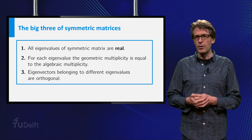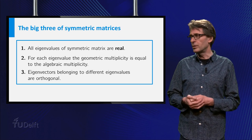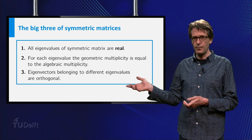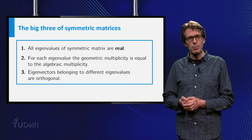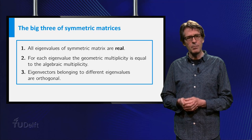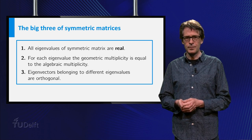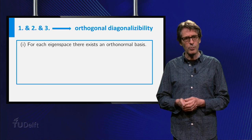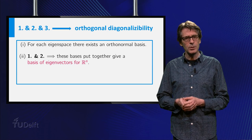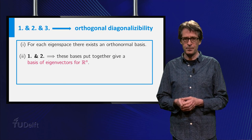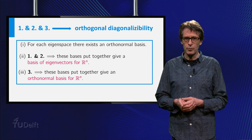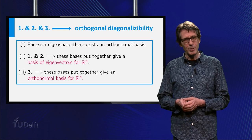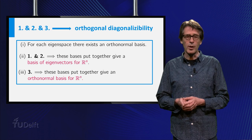Here you see the three important properties of symmetric matrices again. The third property implies that the matrix that diagonalizes A may be taken orthogonal. Namely, for each eigenspace you can construct an orthonormal basis using the Gram-Schmidt process, and these bases, put together, give a basis consisting of eigenvectors for the whole R to the n. Because of orthogonality property 3, this is automatically an orthonormal basis of R to the n.